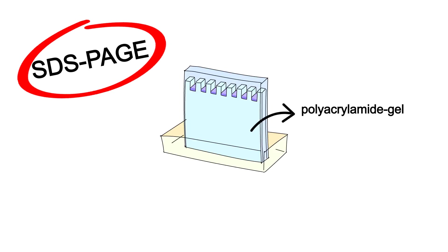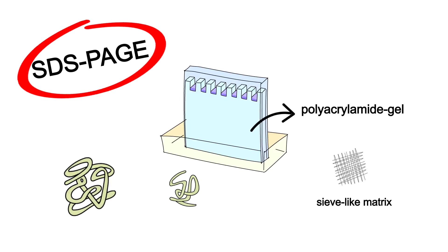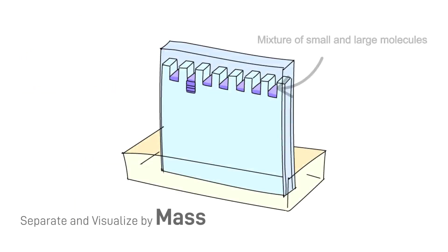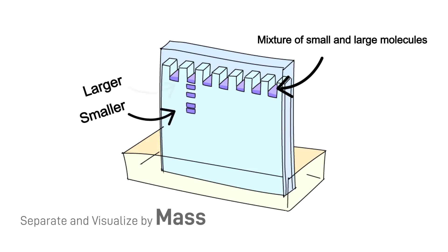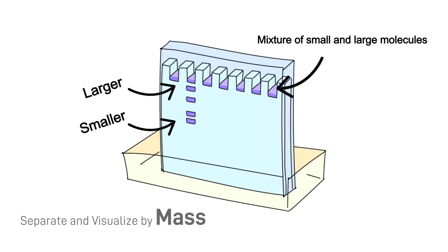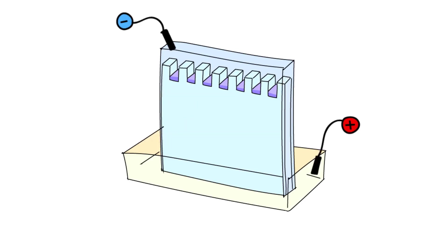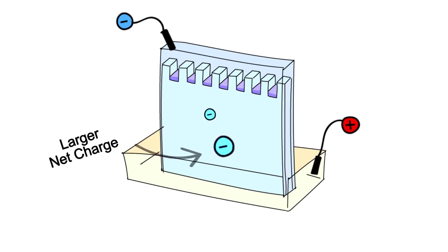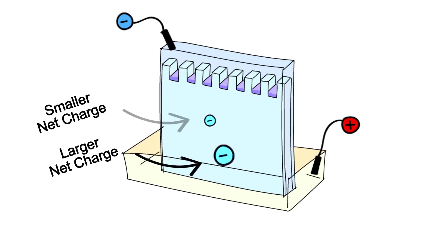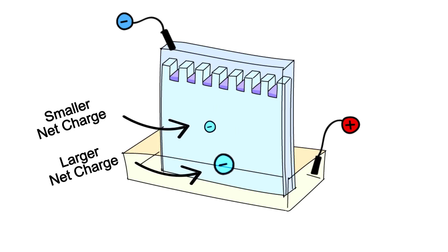SDS-PAGE makes use of a polyacrylamide gel, which is a sieve-like matrix that we use to separate molecules of different sizes. Smaller molecules can fit more easily through the pores in the gel and will travel faster compared to larger molecules, which will have greater difficulty moving through the gel. An electric field will be applied to this gel, which allows molecules that have a net charge to move towards one electrode according to their net charge. Remember that molecules with a larger net charge will move more quickly as well.